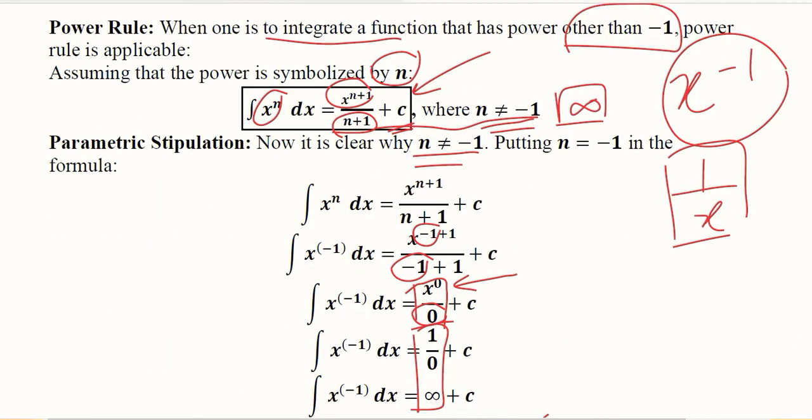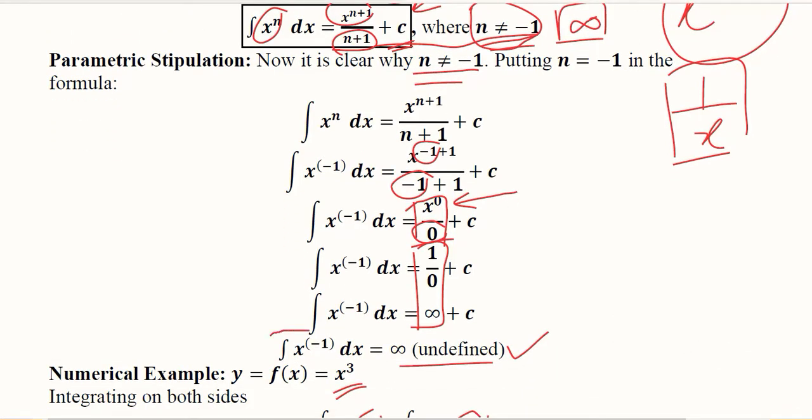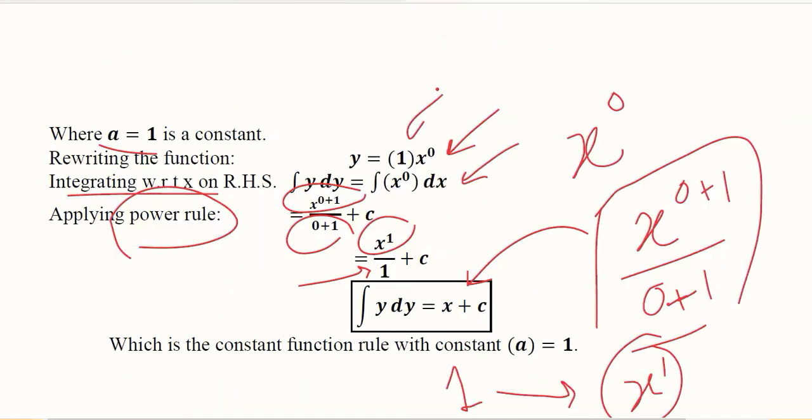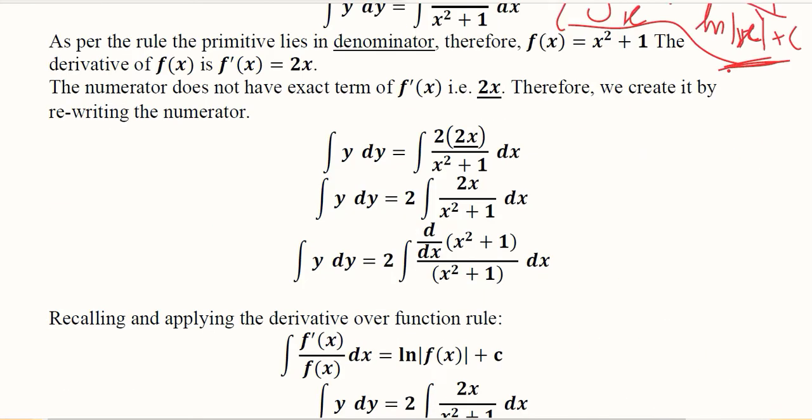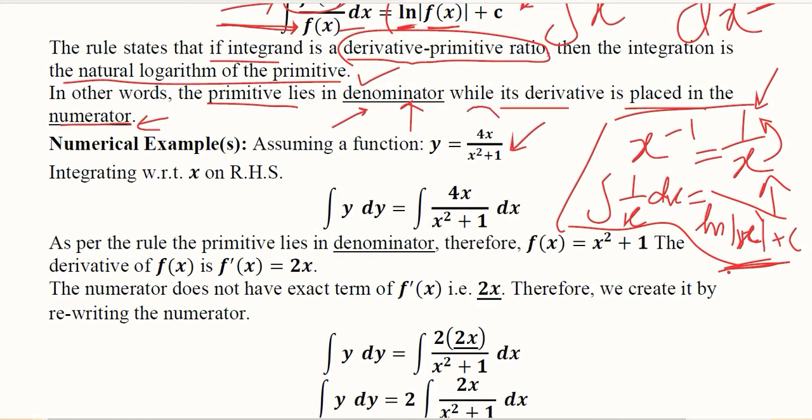Here you can see the power rule was not applicable where the power was minus 1, and it failed. Definitely, the solution cannot be had by using power rule. We have to apply the derivative over function rule in this case. This was that example; here another example is given.